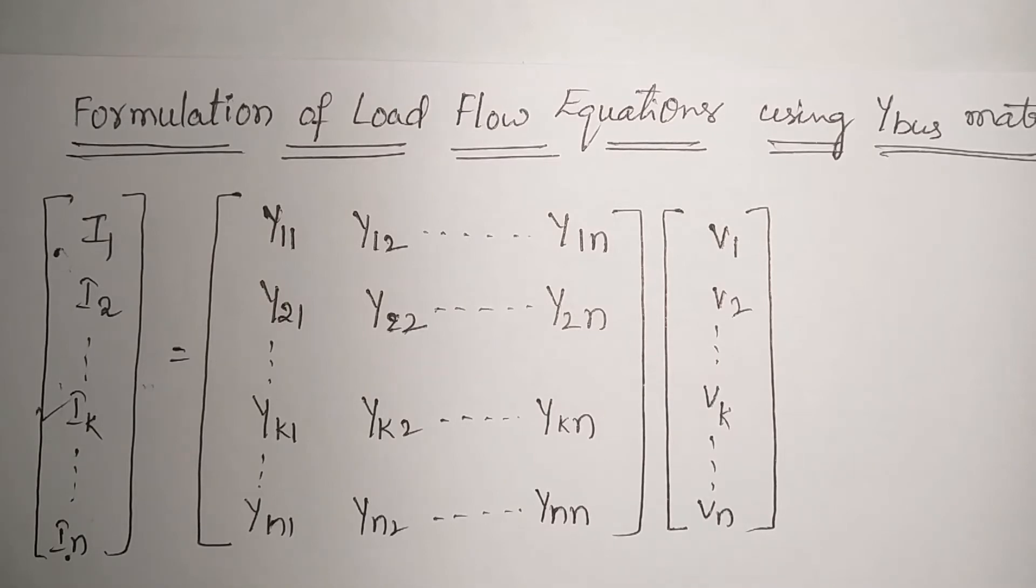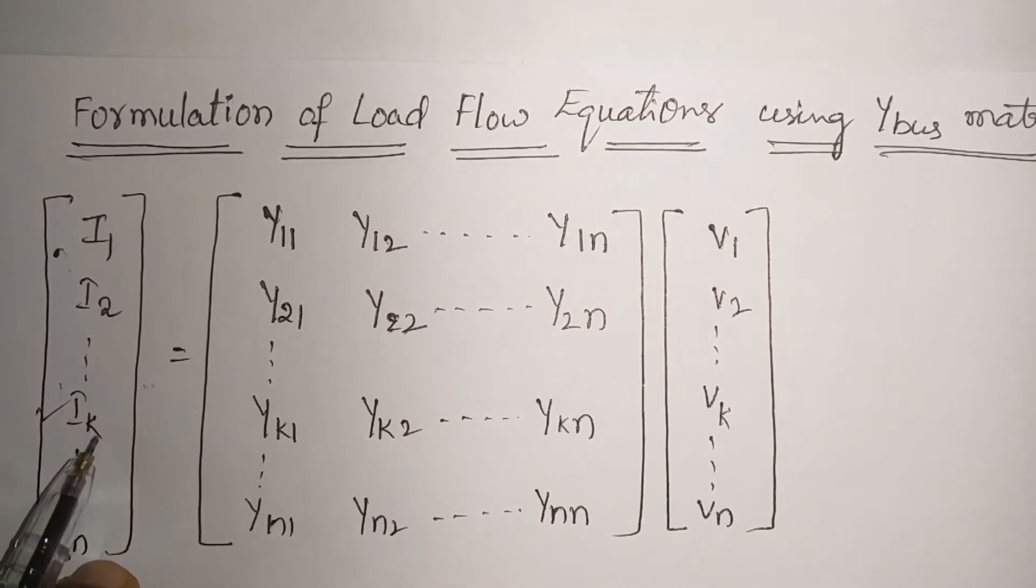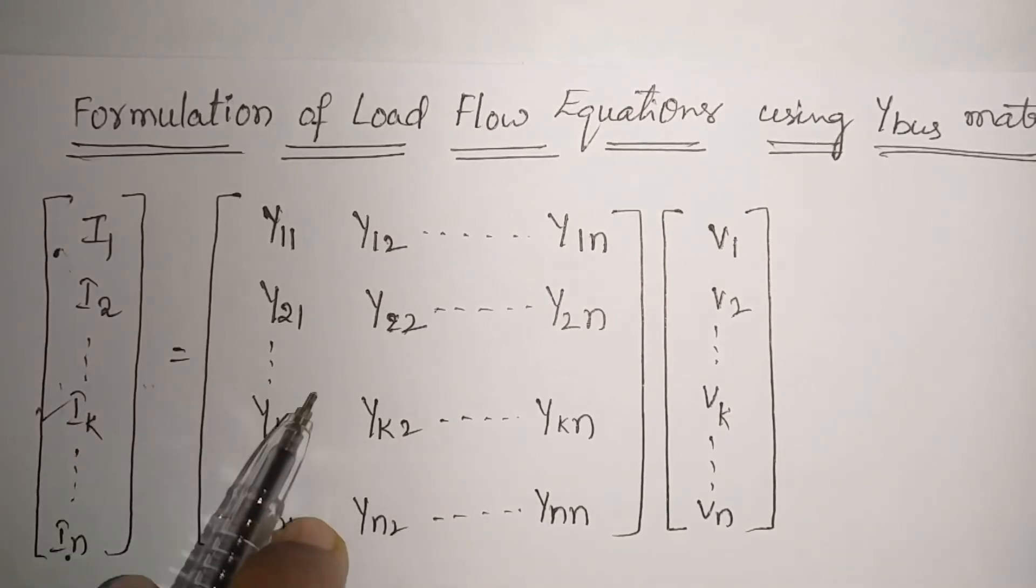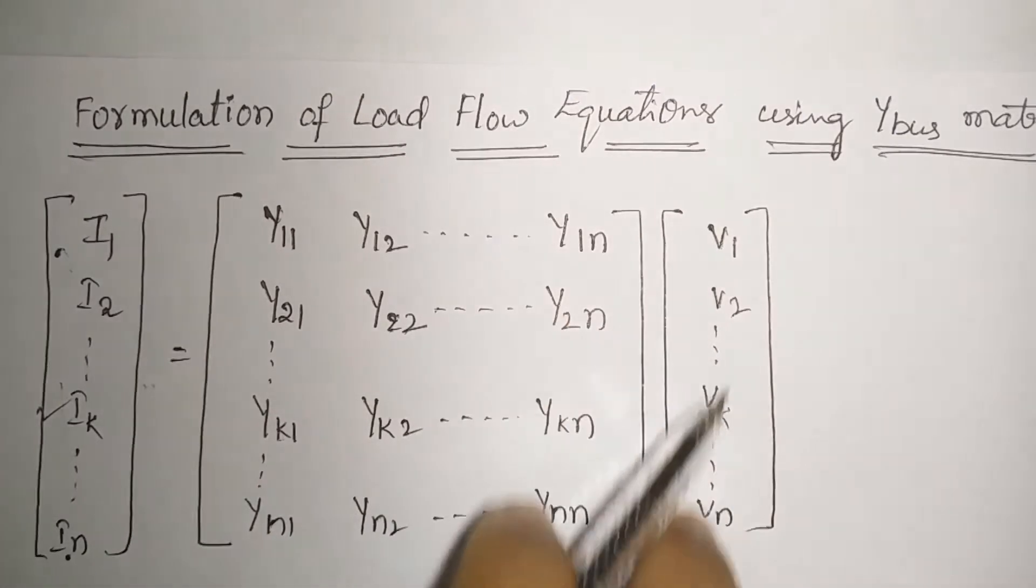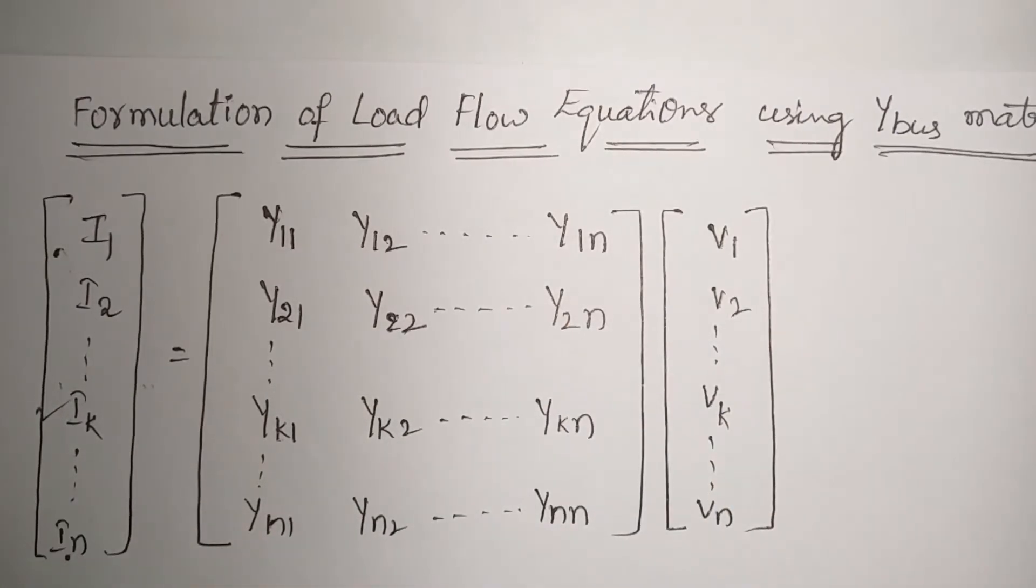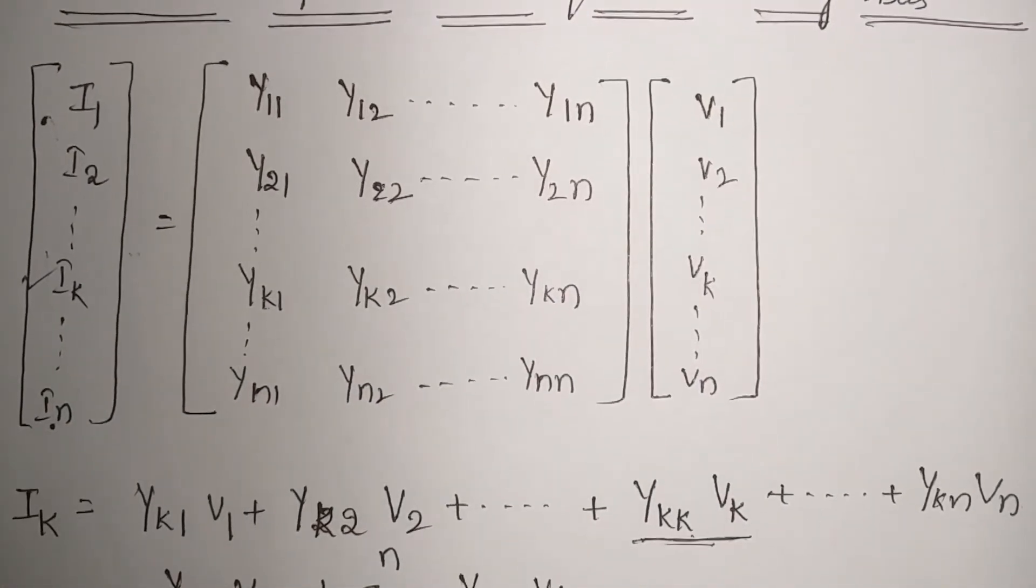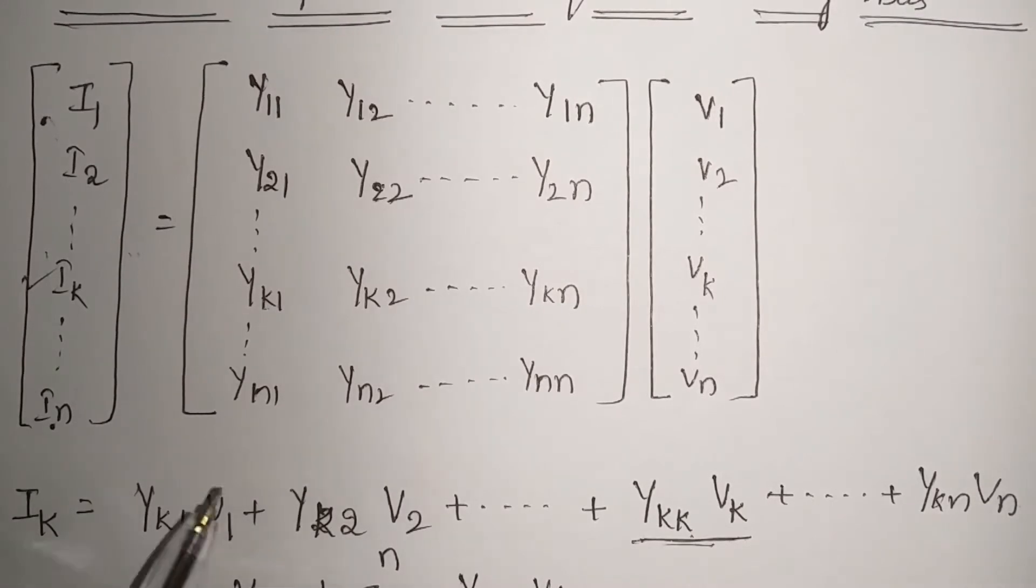Now let us consider the kth element. If you want to write the kth element's current equation, then this row into this column will give you Ik. So if we write, then the equation will seem to be somewhat like this. Now what we are doing, we are separating the kth element and rest of the other elements.